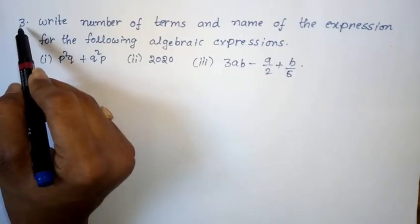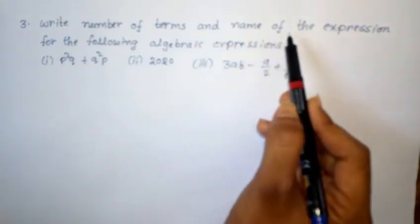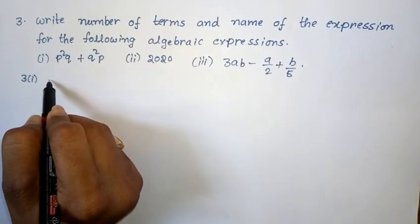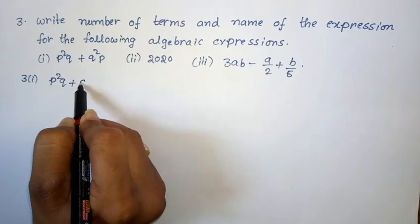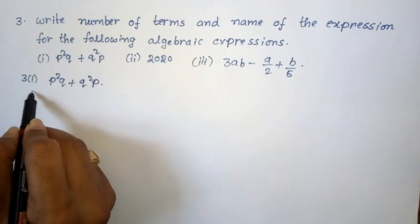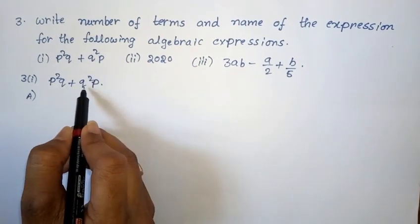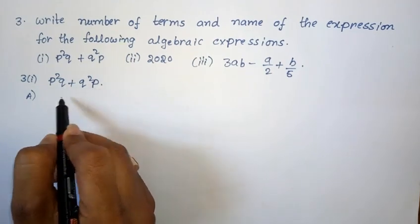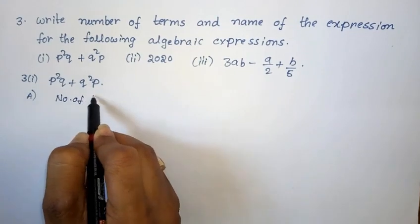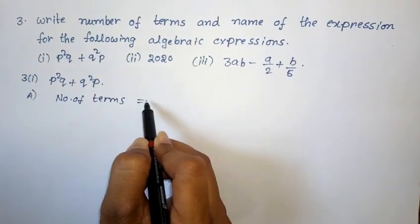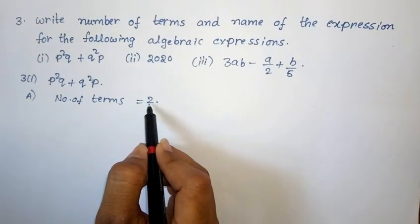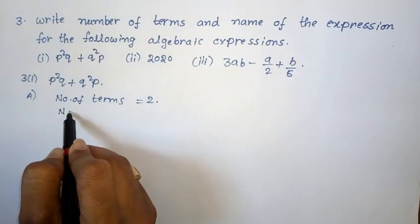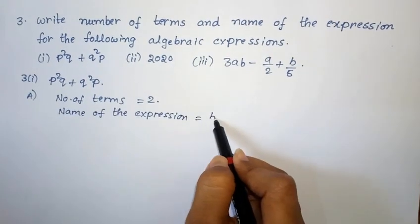Next, 3rd Roman: write the number of terms and name the expression for the following algebraic expressions. 3rd Roman, 1st one: given expression p squared q plus q squared p. In this expression the total terms are 2 — p squared q is the first term and q squared p is the second term. Number of terms equals 2, so the name of the expression is binomial.